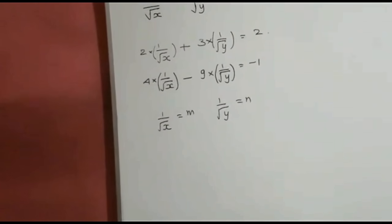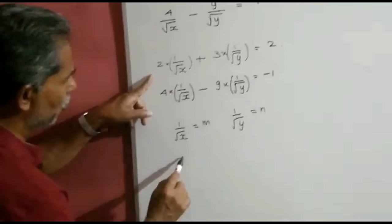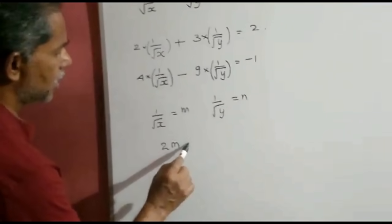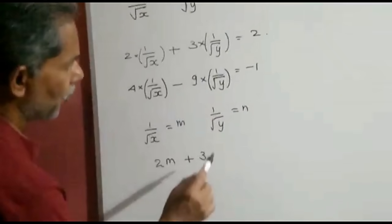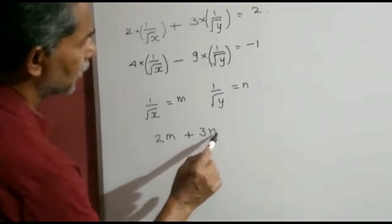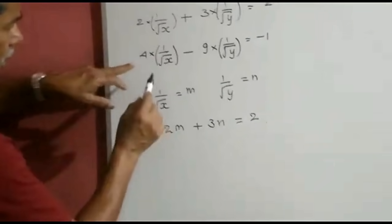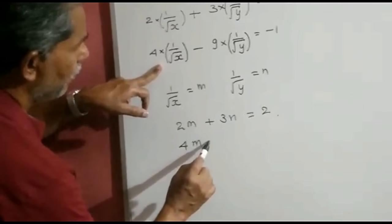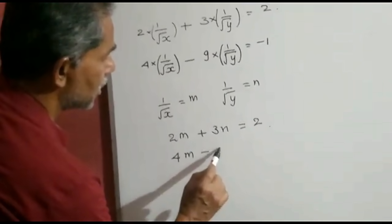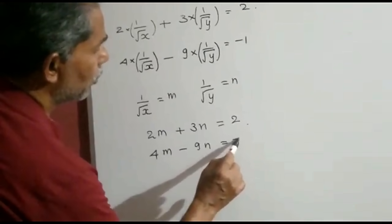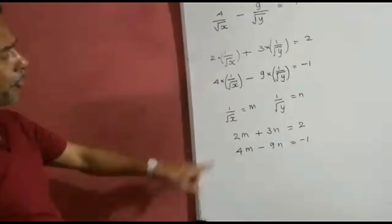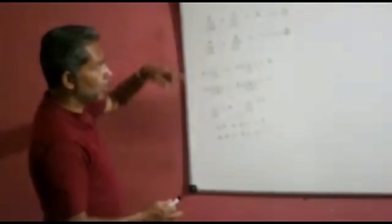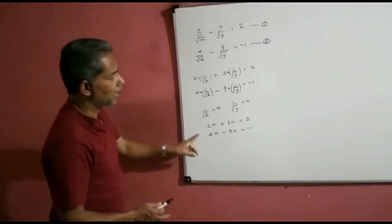So the first equation becomes 2m plus 3n is equal to 2. And the second equation: 4m minus 9n is equal to minus 1. As you can see, both these equations are reduced to linear equations in two variables — but they are in m and n, not x and y.